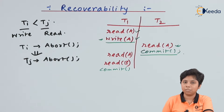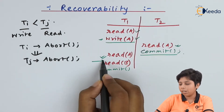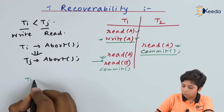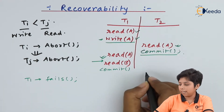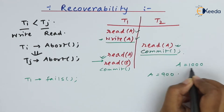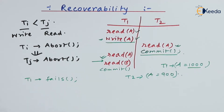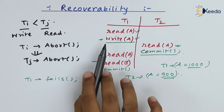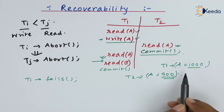T1 commits after the total transaction is complete, so this update has not yet been written to disk. After reading A, T1 fails for some reason. By the durability and atomicity constraints, T2 is holding a value say A equals 900, while A was previously 1000. So T1 restores A to 1000 while T2 is holding A equals 900 and committing that erroneous value.